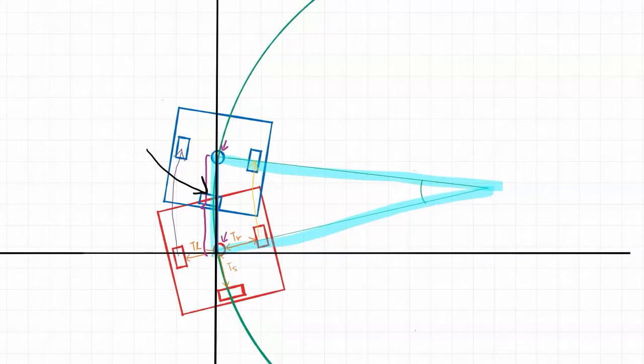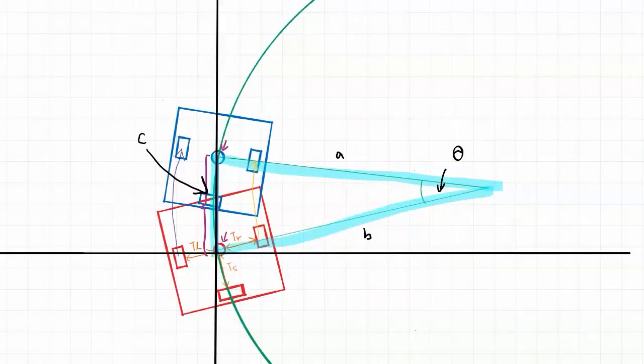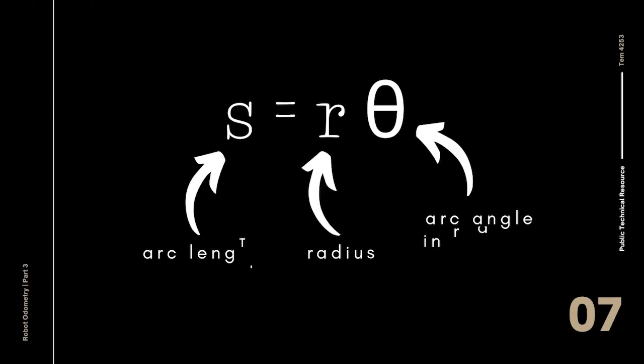Looking back at our diagram, the length we are looking for that is also the y-coordinate is length c over here. Length a and b are simply the arc's radius, which we can calculate with formulas we derived in the previous video. Remember how, in order to find the orientation of the robot, this angle, we use the formula delta L minus delta R over tL plus tR. Now since we know the orientation of the robot, we can once again use the arc length formula introduced in the last video to calculate the arc's radius.